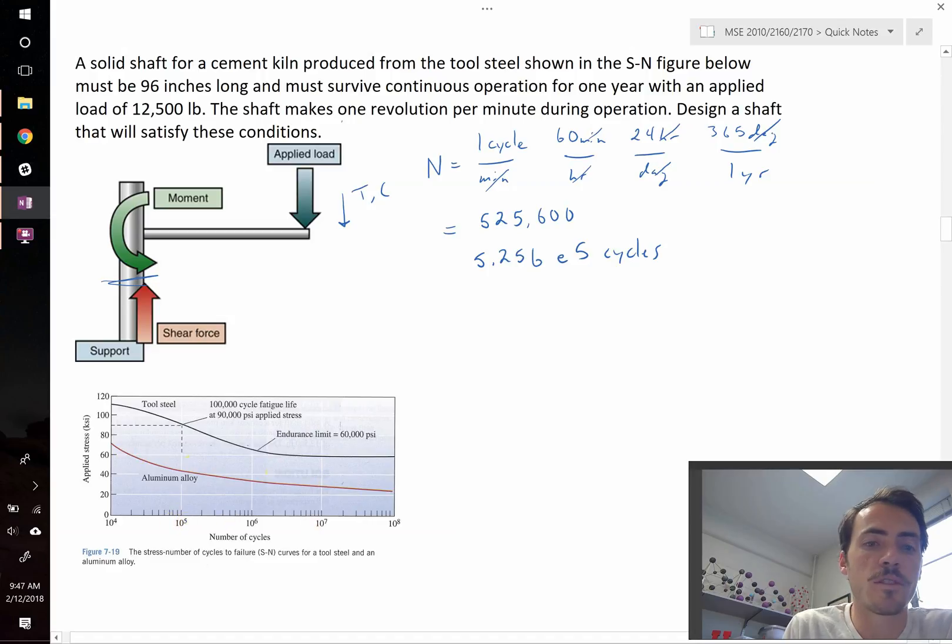So the x-axis shows us the number of cycles. Right here is 10 to the 5th. That would be 100,000 cycles. But we're at 5.25e5. So we go from 1, this is 2, 3, 4, 5. And then we actually go a little bit further. That's going to be hard to read on a graph like this. Let's just leave it at that line. We're going to draw a line up and see where it intersects. Might be somewhere around there.